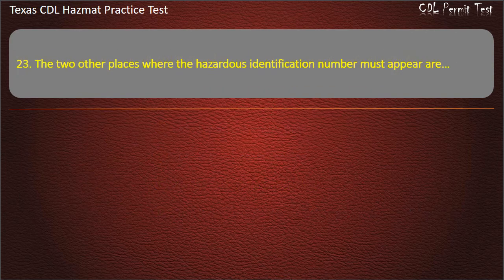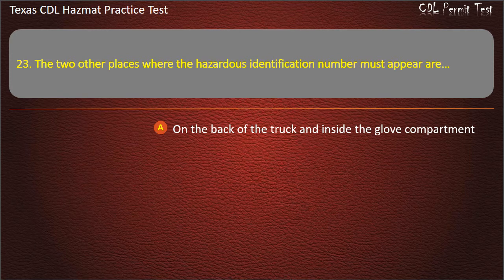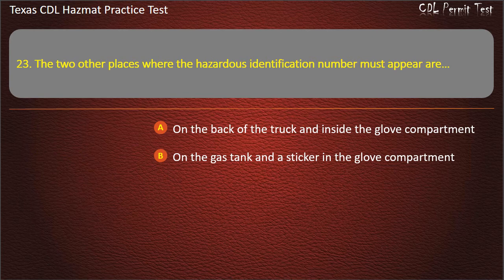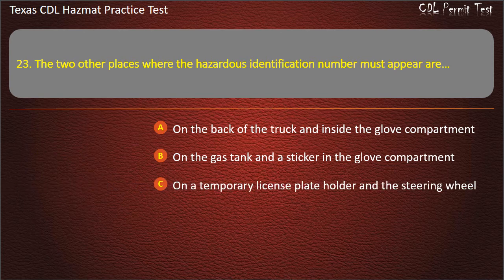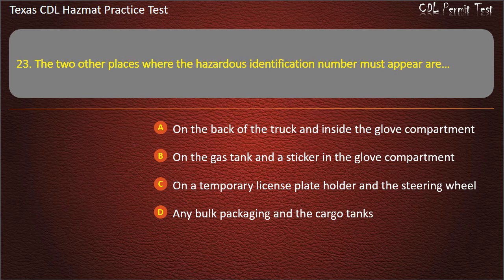Question 23: The two other places where the hazardous identification number must appear are — on the back of the truck and inside the glove compartment; on the gas tank and a sticker in the glove compartment; on a temporary license plate holder and the steering wheel; or any bulk packaging and the cargo tanks. Answer: Any bulk packaging and the cargo tanks.